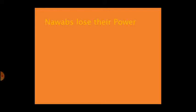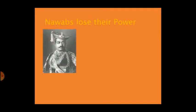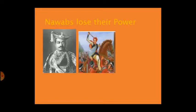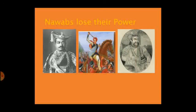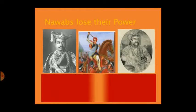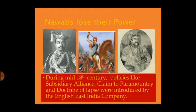First, let us know about the political reasons. The English East India Company was implementing various policies and eroded the power of various ruling families. For example, Nana Sahib, the adopted son of Peshwa Bajirao II, had his pension denied after his father's death. Similarly, Rani Laxmibai requested the company to accept her adopted son as heir of the kingdom, but after her husband's death, the company moved to annex her kingdom. Nawab Wajid Ali Shah's state was also annexed.